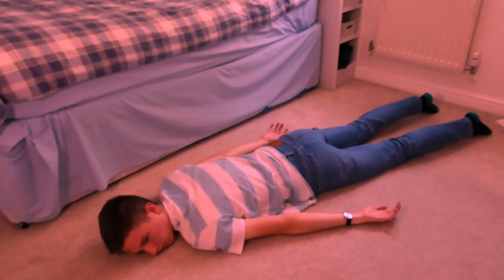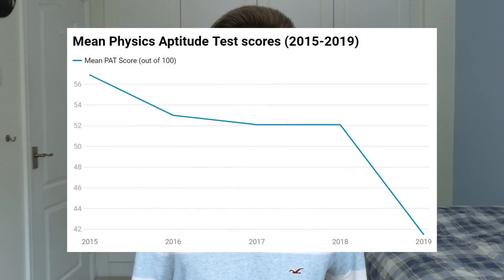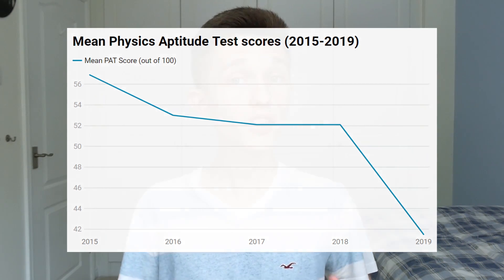I sat the PAT 2019 as part of applying to engineering at Oxford and it was probably the most terrifying exam of my life so far. After I got home I was kind of lay on the floor having a small to moderate breakdown. The 2019 PAT was the hardest so far with a mean mark of 41.5%, a drop of more than 10% from the year prior. This may well be an anomaly, but being as prepared as possible can help you succeed regardless of how tough the paper is.